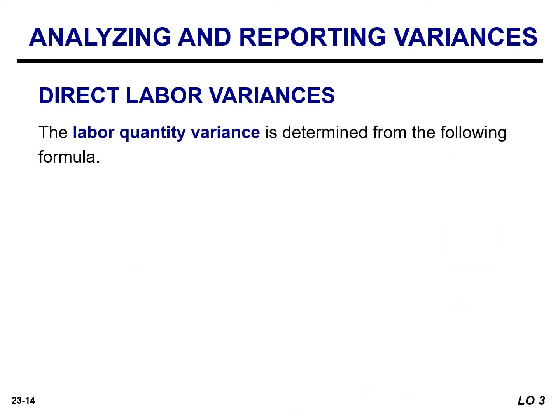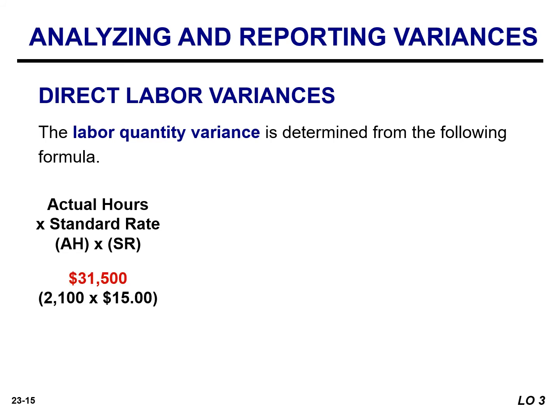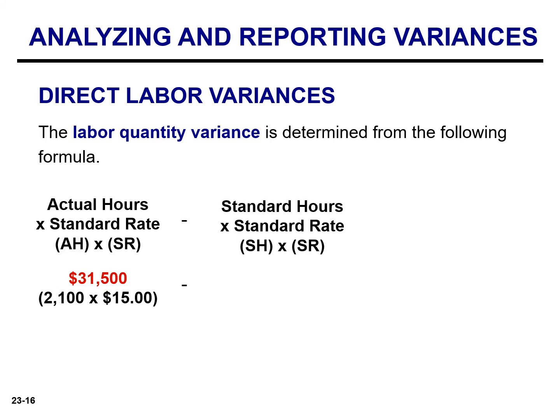The other component of the total labor variance is the labor quantity variance. This results from the difference between the actual number of labor hours and the number of labor hours that should have been worked for the quantity produced. The labor quantity variance is calculated as the difference between the amount that should have been paid for the hours worked — actual hours of 2,100 times the standard rate of $15, which equals $31,500 — and the amount that should have been paid for the standard hours worked, which is standard hours times standard rate, equaling $30,000.